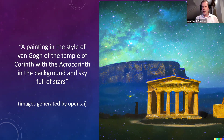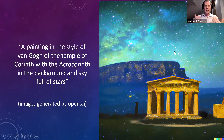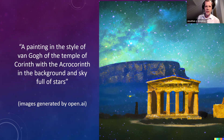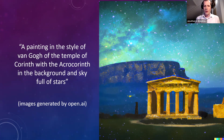As I was putting together this lecture, I decided to see what it could do if I asked it to create imagery. You've probably seen ChatGPT respond in dialogue and text form, but the same technology can also create imagery. This image here — I asked it to create a painting in the style of Van Gogh of the Temple of Corinth with the Acro-Corinth in the background and a sky full of stars, and this is what it came up with.